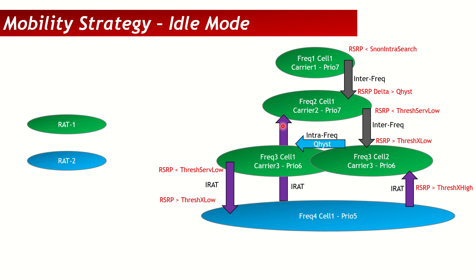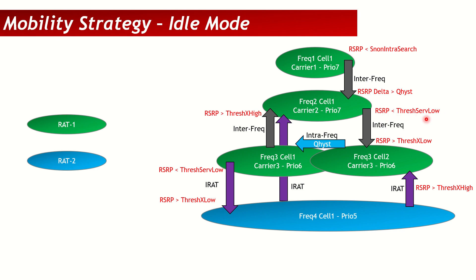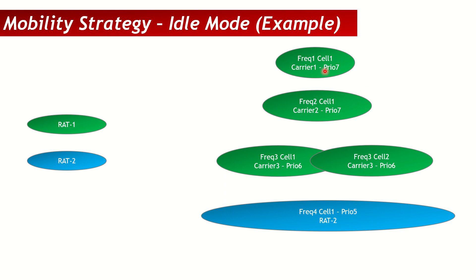Similarly, a user on frequency 3 will see that frequency 2 is above threshold-x-high and will move there, even if it is within the cell center of its current frequency — because frequency 2 has higher priority. However, threshold-x-high must be higher than threshold-serving-low to avoid ping-pong. Let's understand this with a concrete example, as it is a complicated topic.